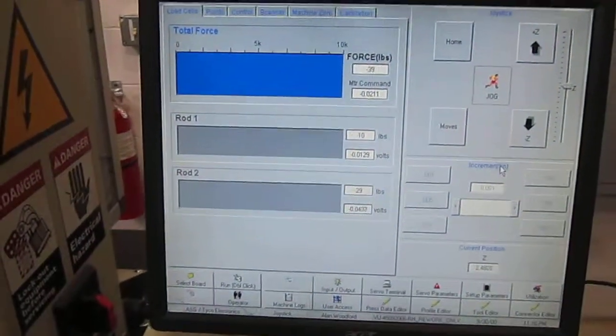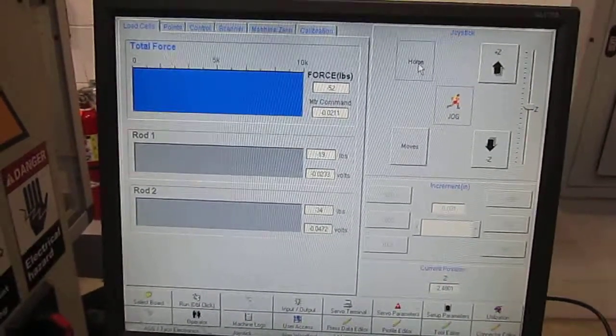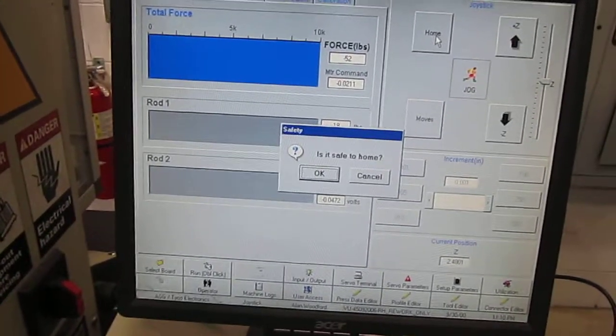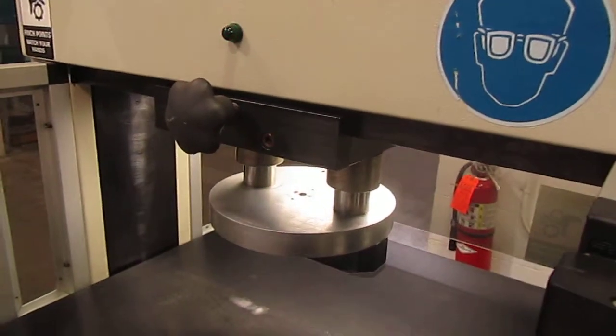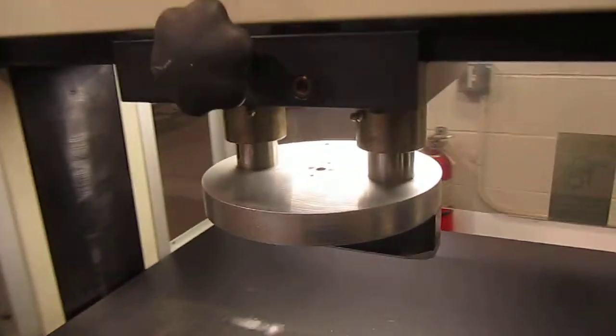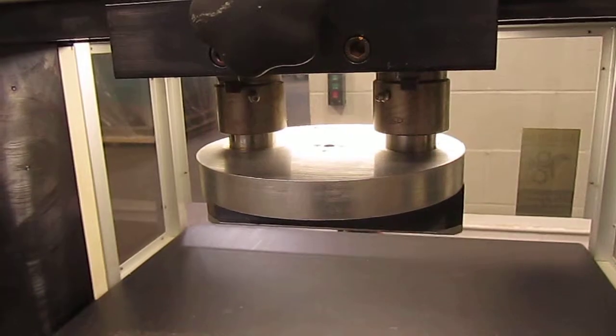Get a reset out of it really quick. Go to the screen, hit home. Is it safe to home? Click OK. You see the Z is going to home position to bind at zero.